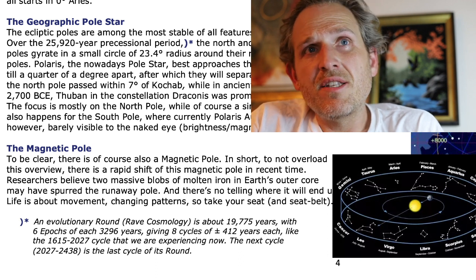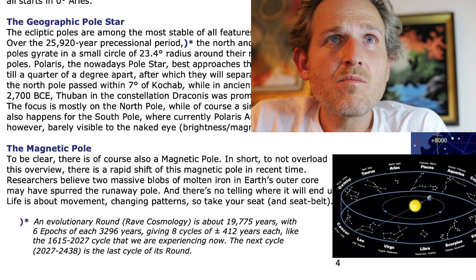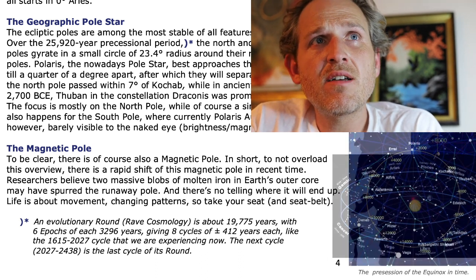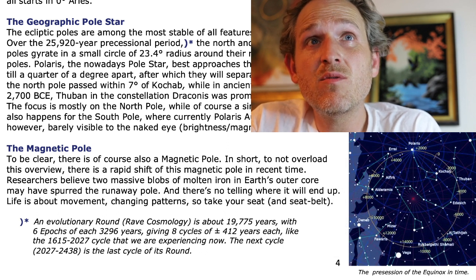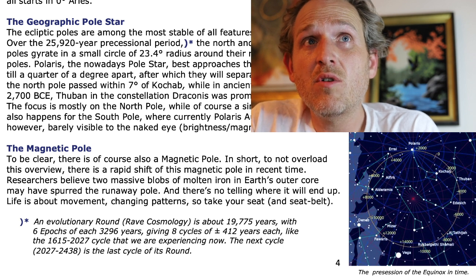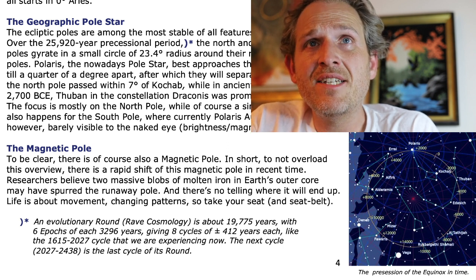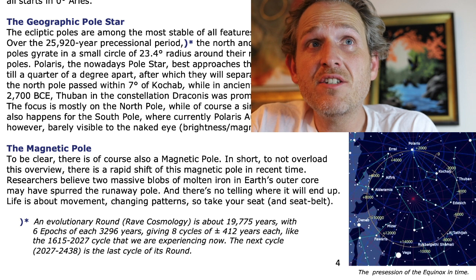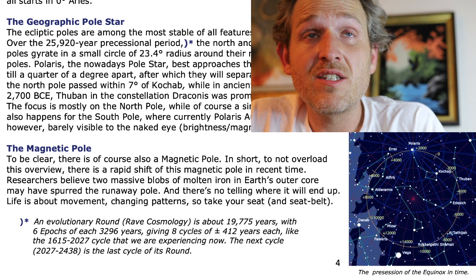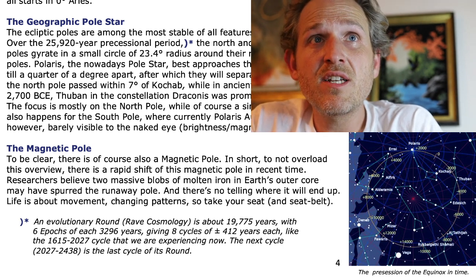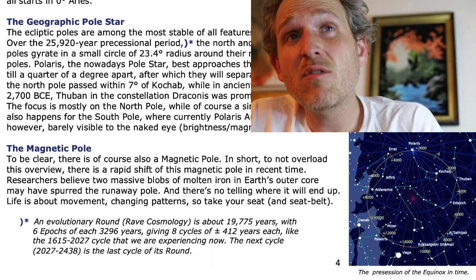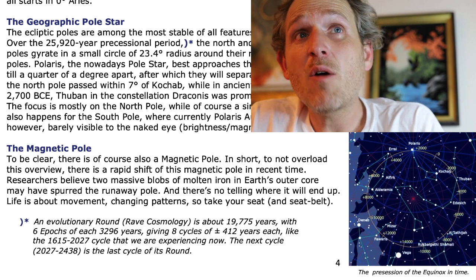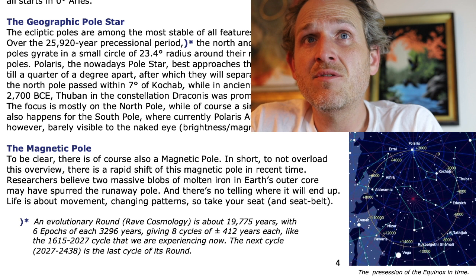Pretty interesting — it would be interesting to study those numbers. Over the 25,920-year processional period, the north and south celestial poles gyrate in a small circle of 23.4 degrees radius around their respective ecliptic poles. Polaris, the nowadays pole star, best approaches the pole until 2102, until a quarter of a degree apart. After which they will separate. In 1100 BCE the north pole passed within seven degrees of Kochab, while in ancient Egyptian times — 2700 BCE — Thuban in the constellation Draconis was prominent. A similar movement also happens for the south pole, where currently Polaris Australis is closest, with brightness and magnitude of 5.45.